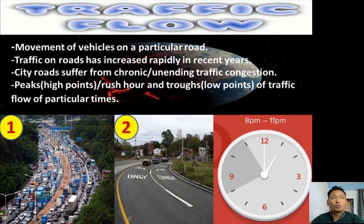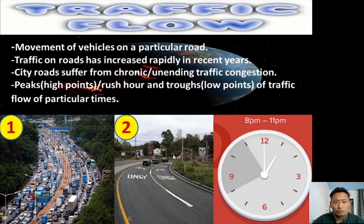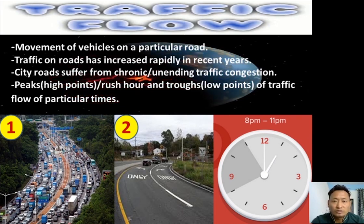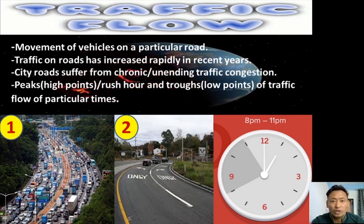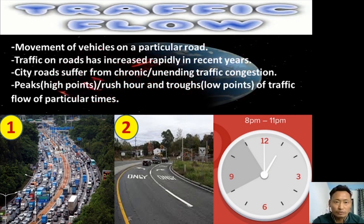Traffic flow means the movement of vehicles on a particular road. Looking at two images of different roads, image one has more vehicles while image two has very few. More vehicles on the road means more traffic flow; fewer vehicles means less traffic flow. Traffic on roads has increased rapidly in recent years — from the 1990s and 2000s onward, the number of vehicles has increased very rapidly.